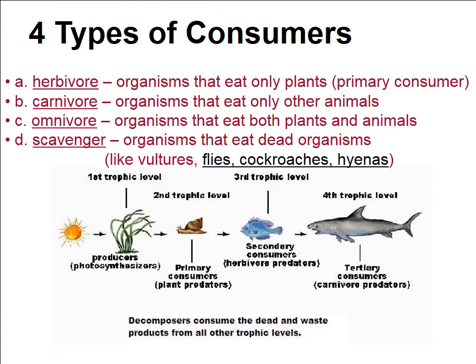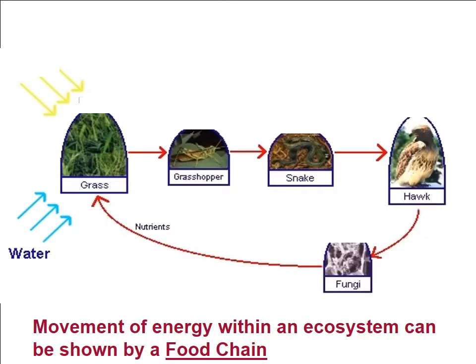We have our first trophic level — producers. Second trophic level — primary consumers, plant predators. Then you have your secondary consumers — herbivores — and your tertiary consumers — carnivores. Trophic levels depict the different levels of consumers. This is important because it shows how energy gets transferred from one organism to the next. The energy all comes from the sun.